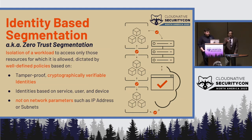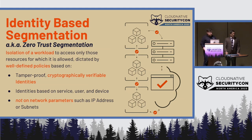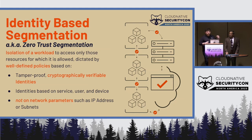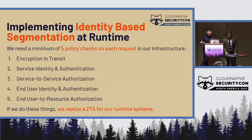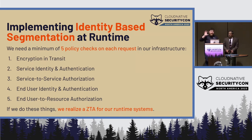Identity-based means it is not based upon any network parameters, and it applies to services, users, and devices. It should not be just any arbitrary identity like a user ID — it should be a cryptographically verifiable identity. That AND in the second bullet point does a lot of heavy lifting: we need not just a service and user identity, but also the device it's originating from. We may use network parameters as part of a risk-based assessment, but that cannot be the only check.